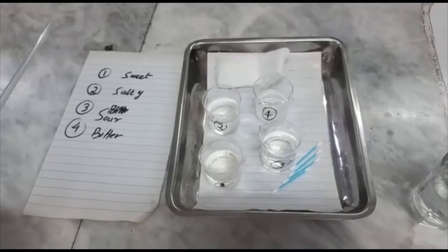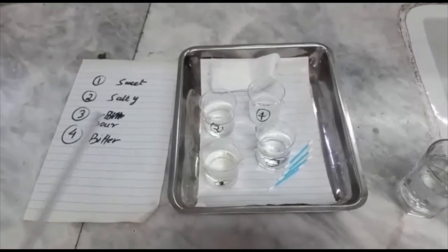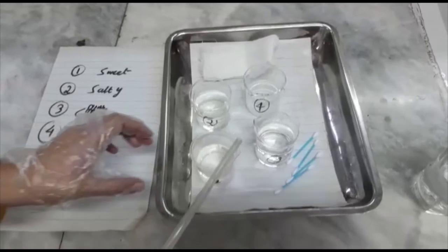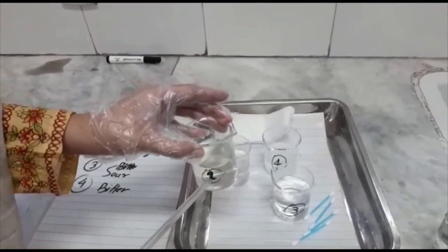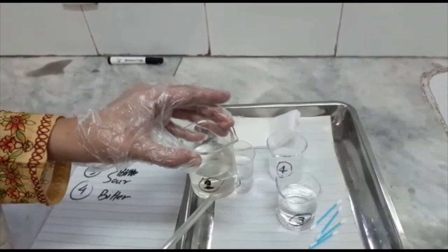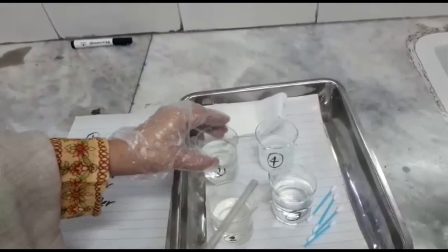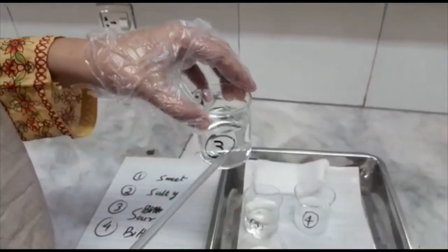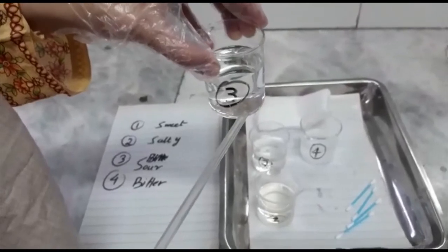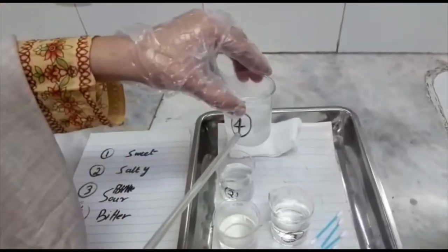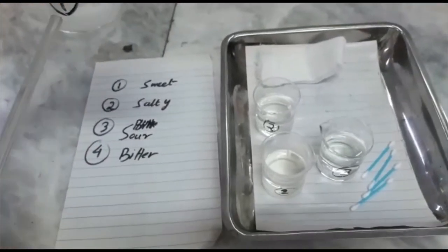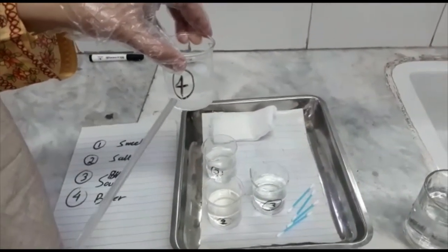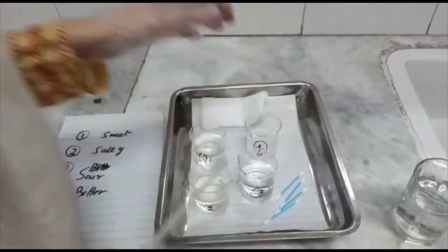Now we will perform a practical of taste sensation and the things we require for this practical are these cotton buds for applying the taste substance, gauze piece for holding the tongue and these 4 solutions which we have labeled. Number 1 which is sugar solution and we have labeled it sweet. Number 2 which is salt solution and we have labeled it for salty. At number 3 is sour solution and we have labeled it with lemon juice. And lastly at number 4 is bitter solution. We have prepared it with quinine tablet and labeled it bitter. Always remember students that we will test bitter solution at end so that it does not dominate other taste substances.